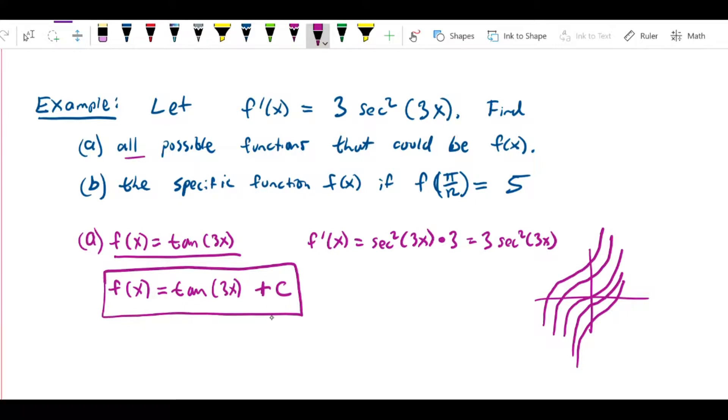Where that C can be any constant, and by writing it in the symbolic form, we're representing the idea that it could just be any number, and we could be shifting it up or down. So this represents all possible functions that could be f(x).